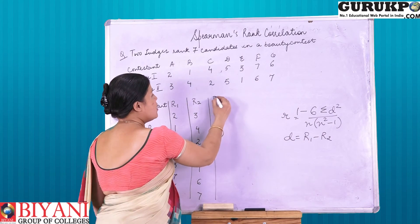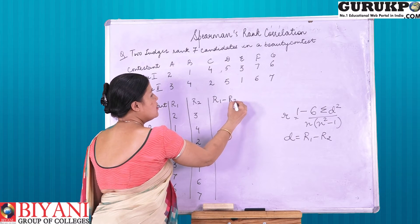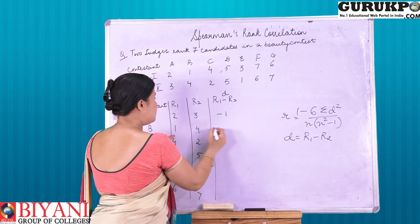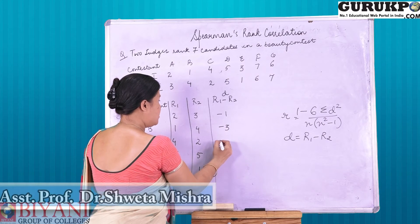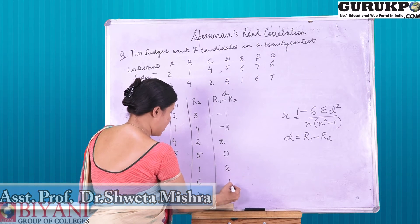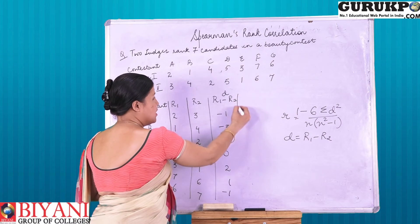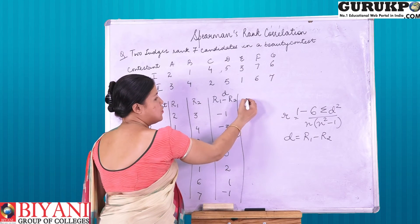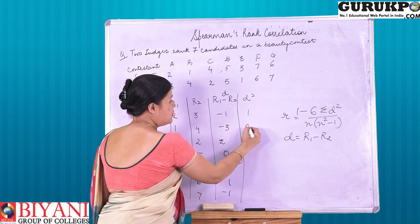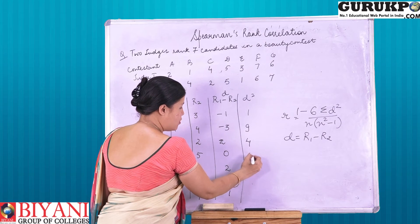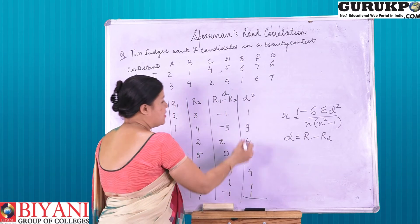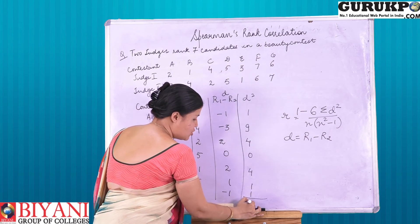Here we are going to calculate d, that is r1 minus r2. It comes to minus 1, minus 3, 2, 0, 2, 1, and minus 1. As per the formula, we are going to square these values: 1, 9, 4, 0, 4, 1, 1, and the sum of d squared comes to 20.